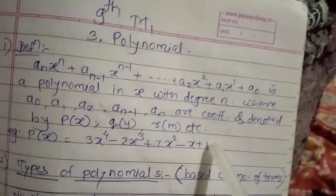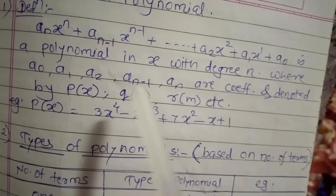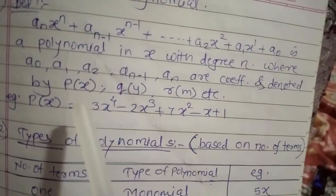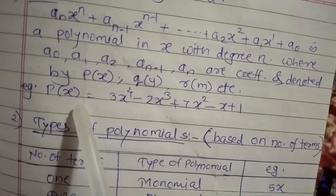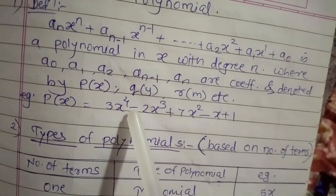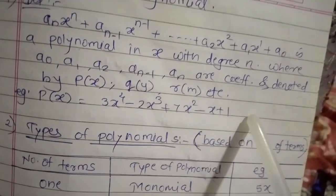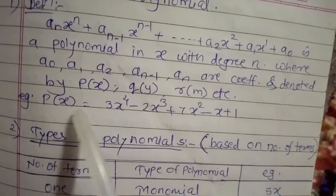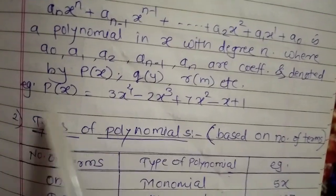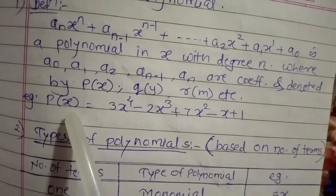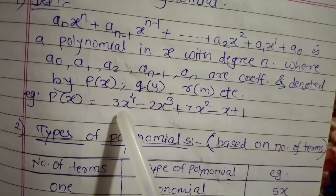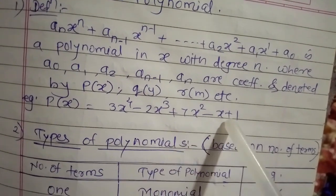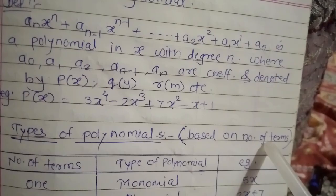The definition is a little difficult to understand, but if we take some examples it will be easier. The expression which is in the form like p(x) — remember that the polynomial is always denoted by p(x) — for example p(x) = 3x^4 - 2x^3 + 7x^2 - x + 1. When there are many terms like this, such an expression is called a polynomial.